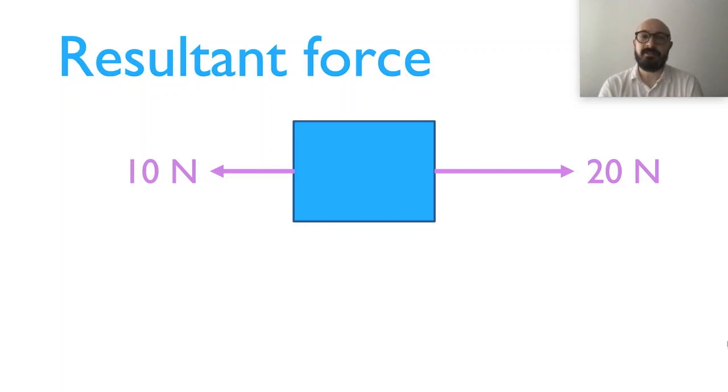My second example is on resultant force. So you show them this box, you say there's 20 newtons to the right and there's 10 newtons to the left. So calculate the resultant force. Well they know they need to do 20 minus 10 and that gives them 10 newtons. So it must therefore be a 10 newton force to the right.